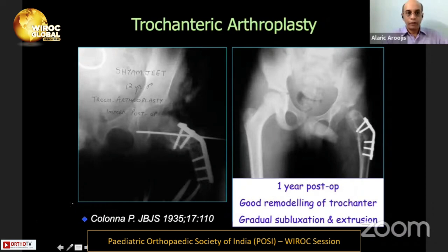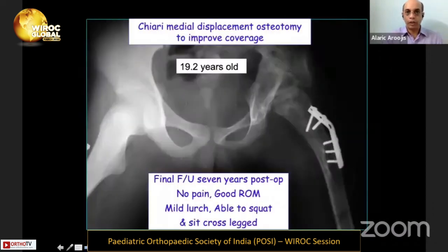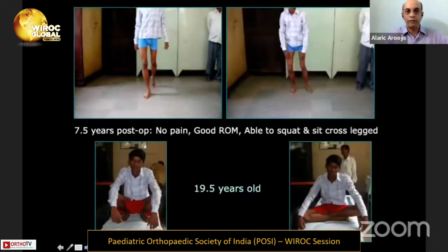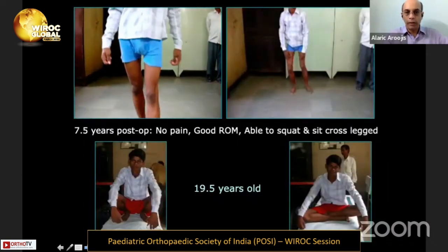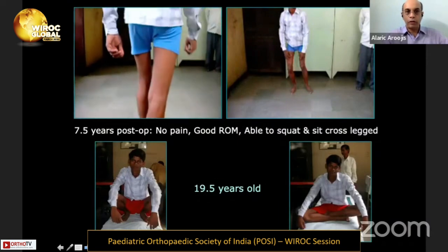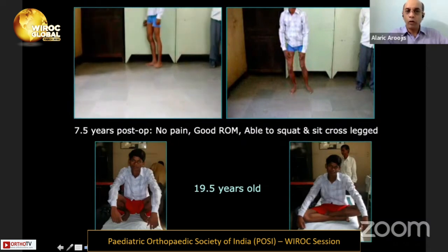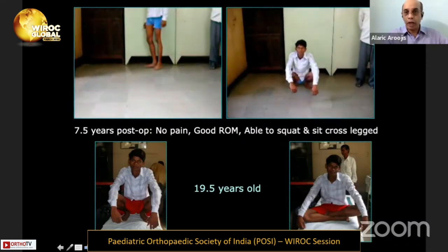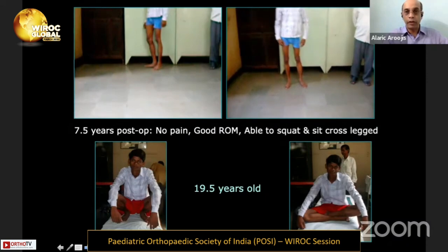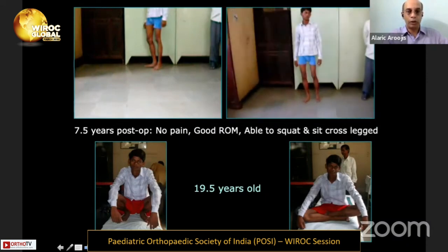This child subsequently required a further Chiari osteotomy to improve coverage. At seven-year follow-up, the child is now skeletally mature at 19 years old, with fairly good range of motion, no pain, and able to squat and sit cross-legged. In the short term through skeletal maturity, this child is doing well. Obviously at some point a hip replacement will be needed, but this procedure has bought meaningful time.